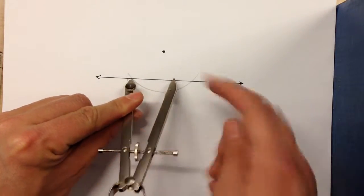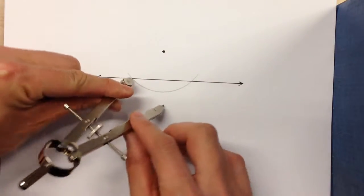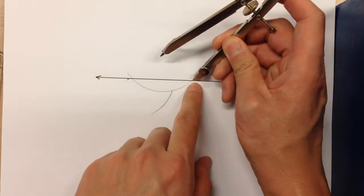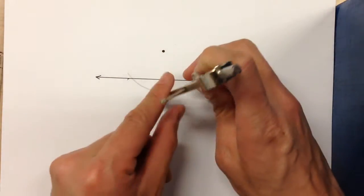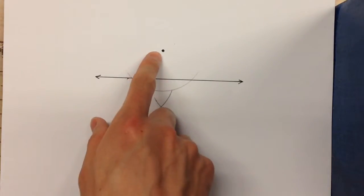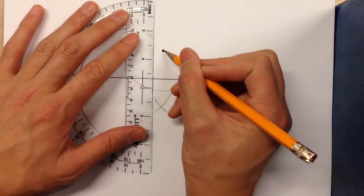So for example, from this end I'm going to swing an arc down here. From this end I'm going to swing an arc down here and I already know this point is going to be on that perpendicular line.